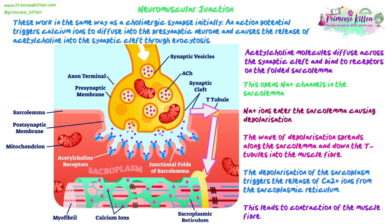The T-tubules come into contact with the sarcoplasmic reticulum. That change in membrane potential — the depolarization spreading around the sarcoplasmic reticulum — is going to trigger the release of calcium ions from the sarcoplasmic reticulum, which then move down into the myofibril and trigger the muscle contraction. We need to know how those calcium ions are released by that depolarization.